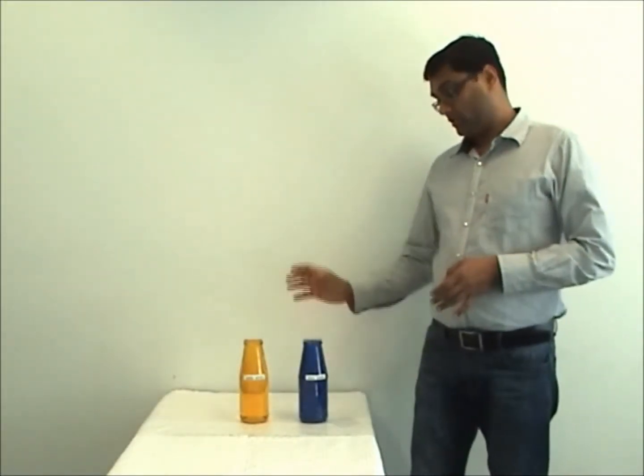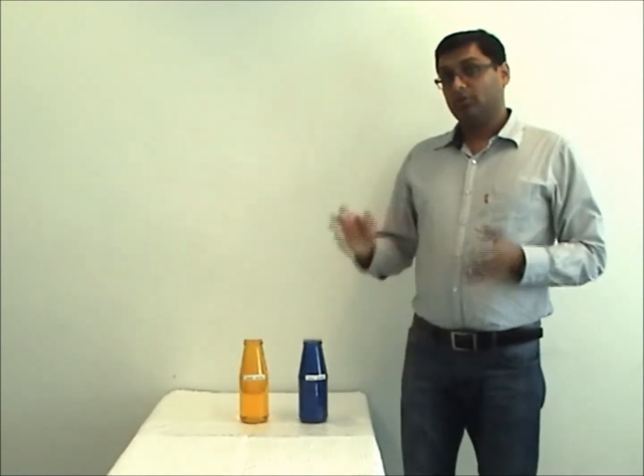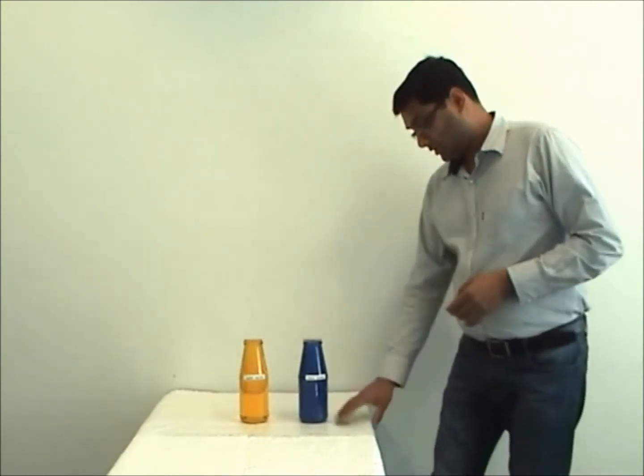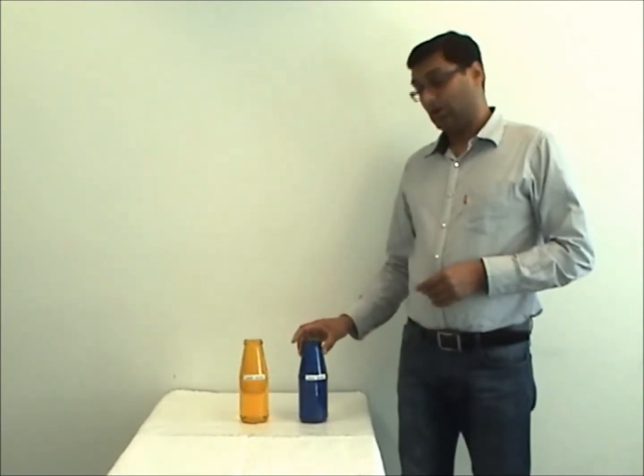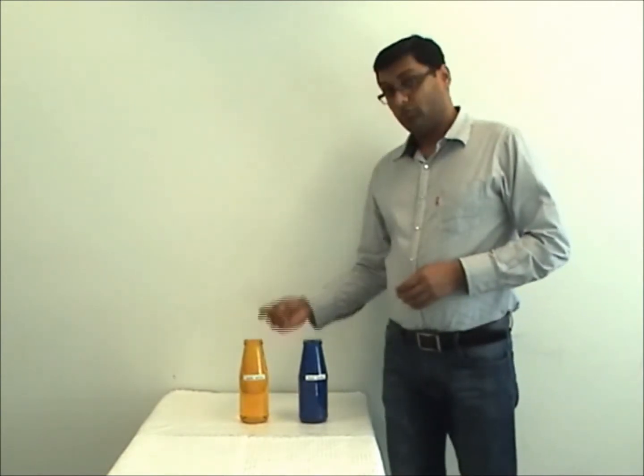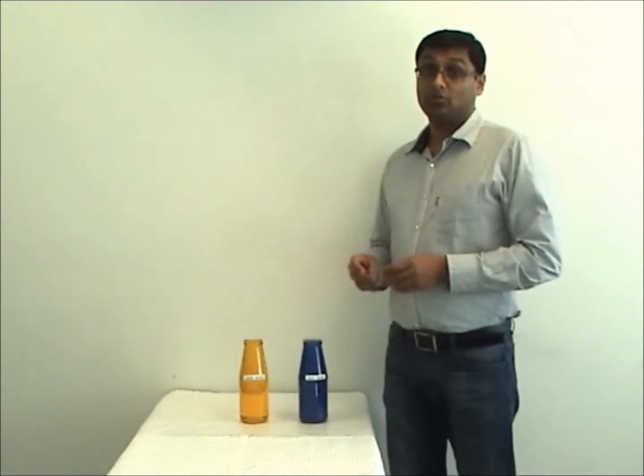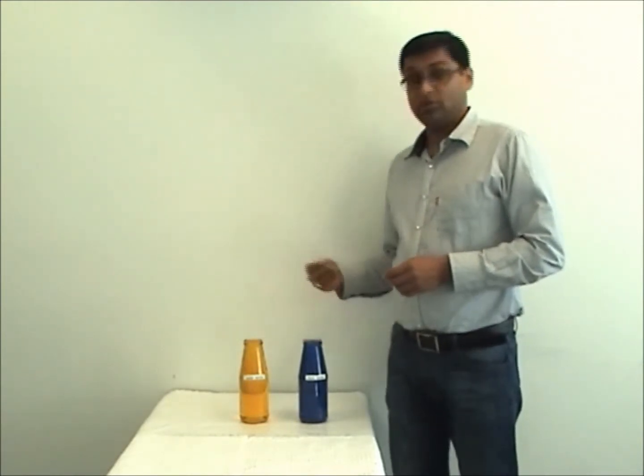So moments ago we saw what happens when we have cold water on the top of the warm water. Now we'll just reverse that scenario. This time again I've got blue cold water and warm yellow water. Now this time I'm going to put the warm water on the top. Remember warm water being lighter would like to stay on the top and the cold water would like to stay on the bottom.